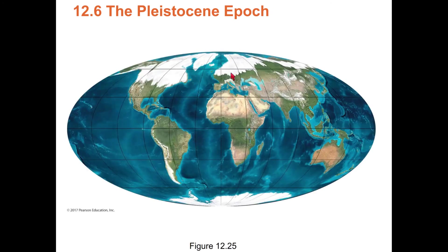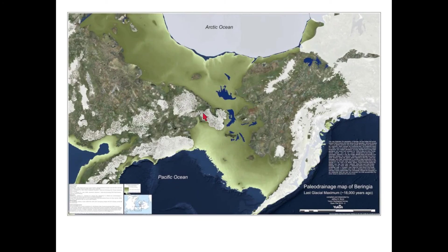Here's a reconstruction of Earth at the glacial maximum — massive ice sheets over North America and Eurasia. Sea level was about 360 feet lower, so you could walk from Australia to New Guinea, from England to France, and from Asia to North America. This is the Bering Land Bridge — all that green area was dry land. About 18,000 years ago there were ice-free corridors allowing humans to migrate out of Asia into North America.